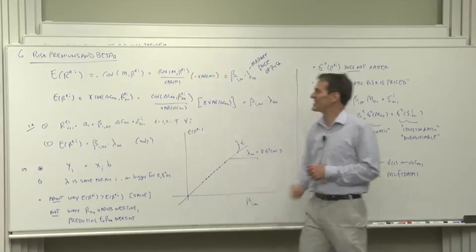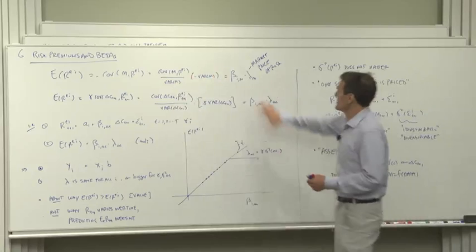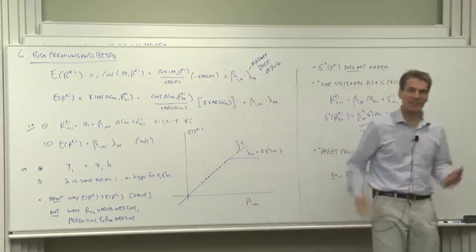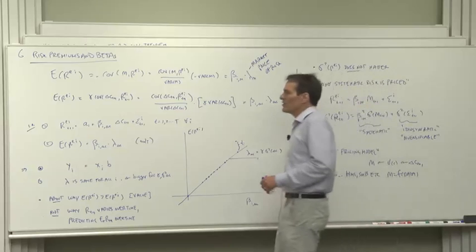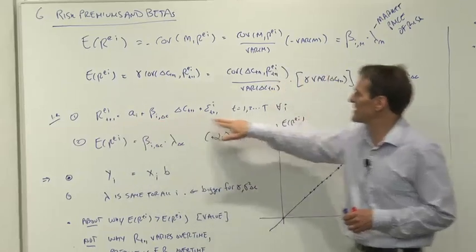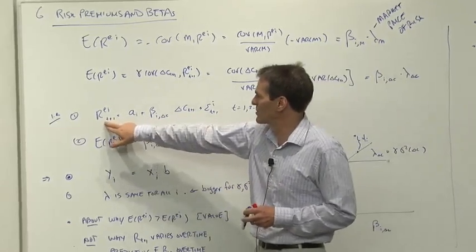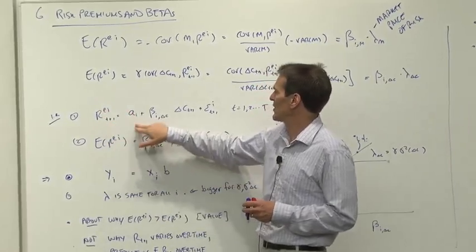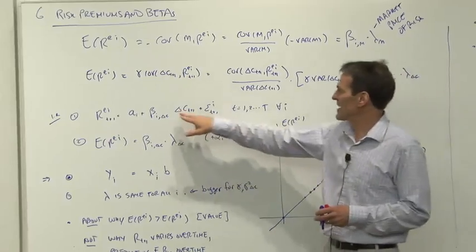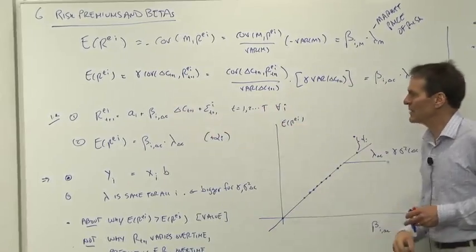So the beta, the covariance, is the thing that makes one asset different from another. This notation suggests the common procedure. How would you go about checking a model like this? How would you use a model like this? Well, you could do it in two steps. To evaluate the covariance, your first step is you run a time series regression. You run over time the return on an individual asset on a constant on consumption growth. And this regression is run over time for each individual asset.